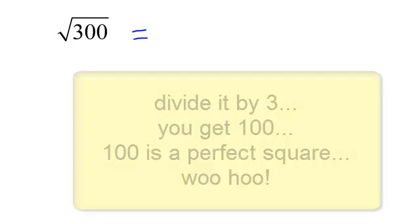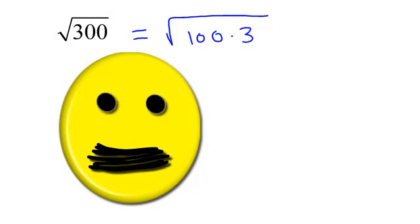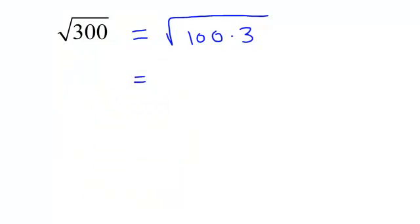So that puts a smile on my face. I know that I can break that down to 100 times 3, and radical 100 is perfect. It is perfect of 10. So when it comes out from underneath the radical, it will be 10, and then I will just have radical 3 hanging out.